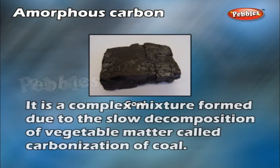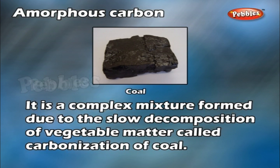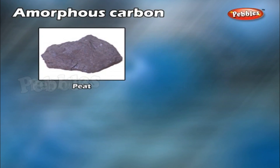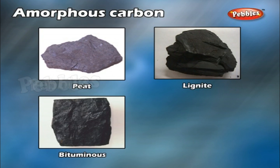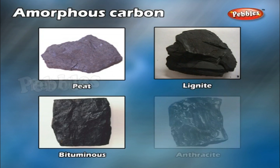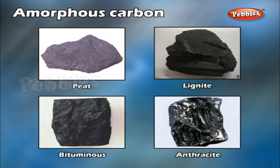Coal is a complex mixture formed due to the slow decomposition of vegetable matter, called carbonization of coal. There are four forms of coal: Peat, Lignite, Bituminous, and Anthracite coal.